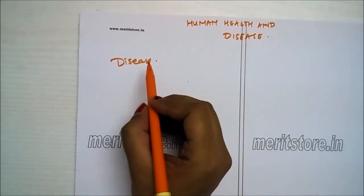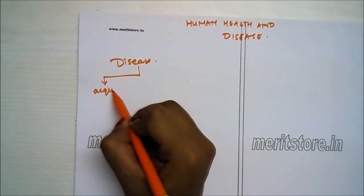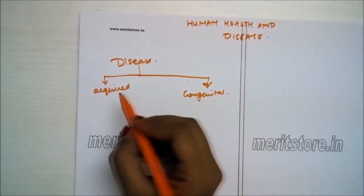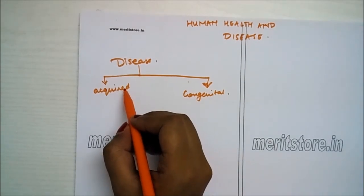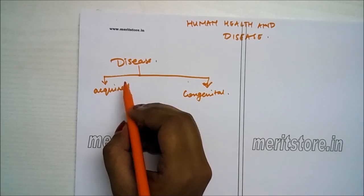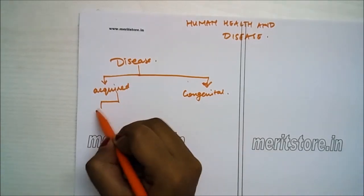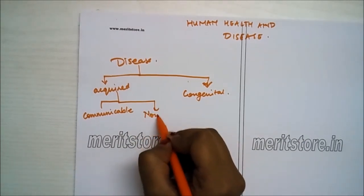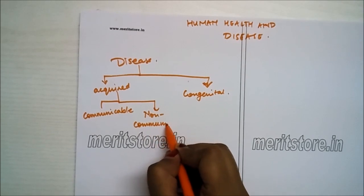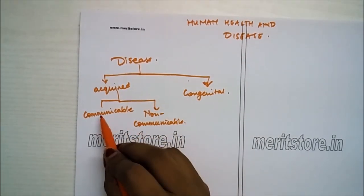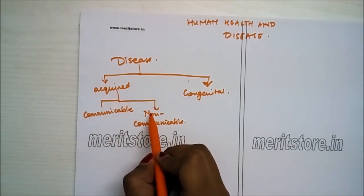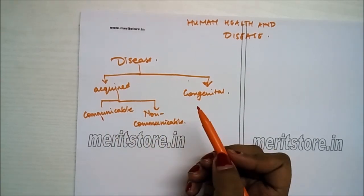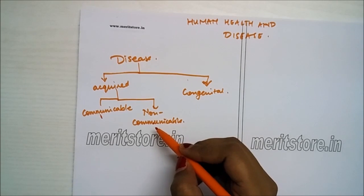Disease may be broadly classified into two types: acquired and congenital. Acquired diseases are contracted after birth due to various reasons like infection, degeneration, diet, addiction, depression etc. These are further of two types: communicable and non-communicable. Communicable diseases can pass from one infected person to a healthy one, while non-communicable diseases remain confined to the person who develops them and do not spread. Non-communicable diseases are caused by agents other than pathogens.